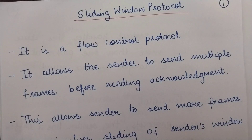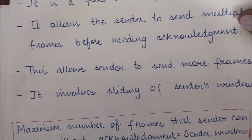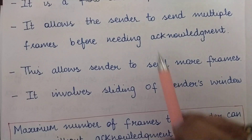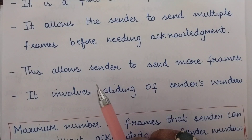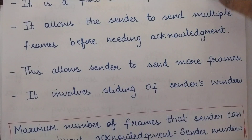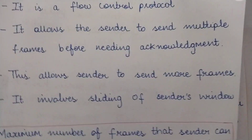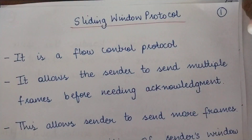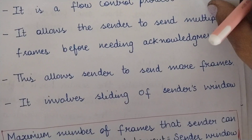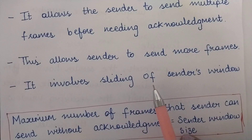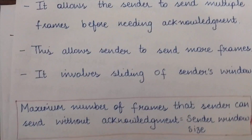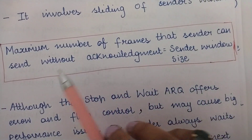This does not require waiting for acknowledgement after each and every frame, which speeds up the process of sending frames. This involves sliding of the sender's window — hence the name sliding window protocol. We assume a virtual kind of window which decides how many frames can be sent at a given point of time. Whatever is the size of the sender's window, that many frames the sender can send at any given point of time.